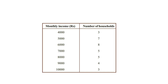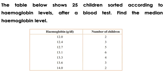Let us learn how to find the median from frequency tables by taking a problem. The table shows 25 children sorted according to hemoglobin levels after a blood test. Find the median hemoglobin level. There are 25 children, so median is the value that comes in the middle — 12 children should have less than the median level and 12 more than the median. The hemoglobin level of the 13th kid is the median.